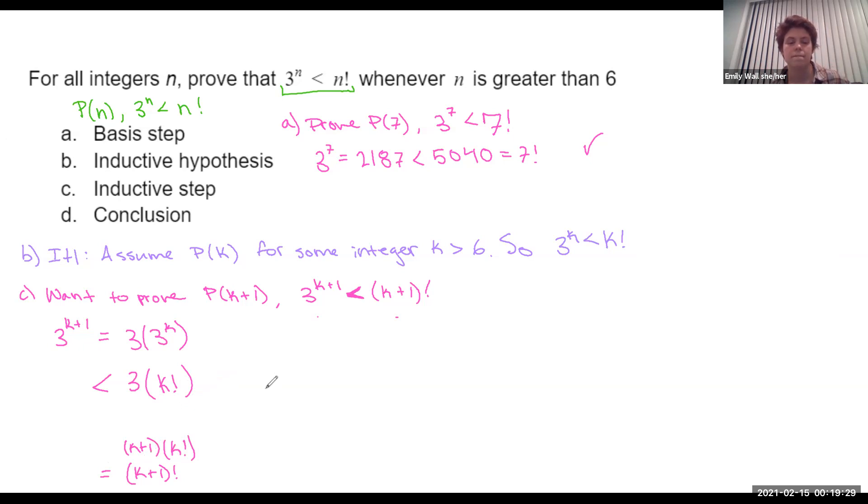So let's think. What do we know about k? We know that k is greater than 6. So what can we say about 3 compared to k+1? Well, k at its smallest is 7. That's why the basis step was P(7). So k+1 at the very smallest is 8. So k+1 is always going to be bigger than 3, no matter what k is, because k is already going to be bigger than 6. So this inequality holds.